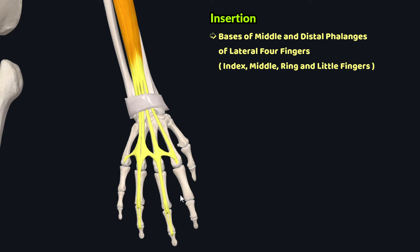The tendinous insertion of this muscle onto the index and little fingers is not shown in this model, but this muscle also has insertion onto the middle and distal phalanges of these two fingers as well.